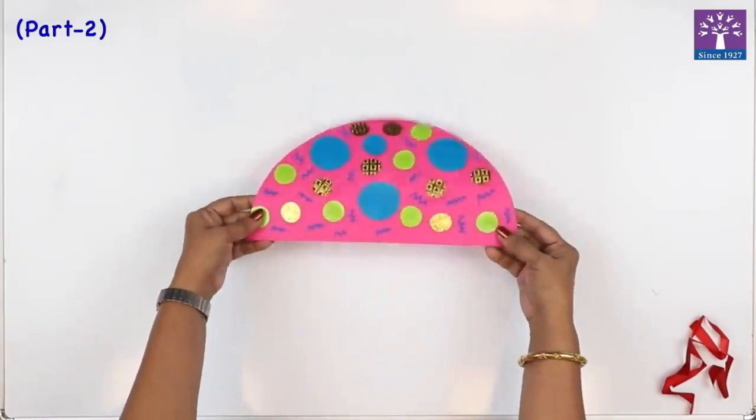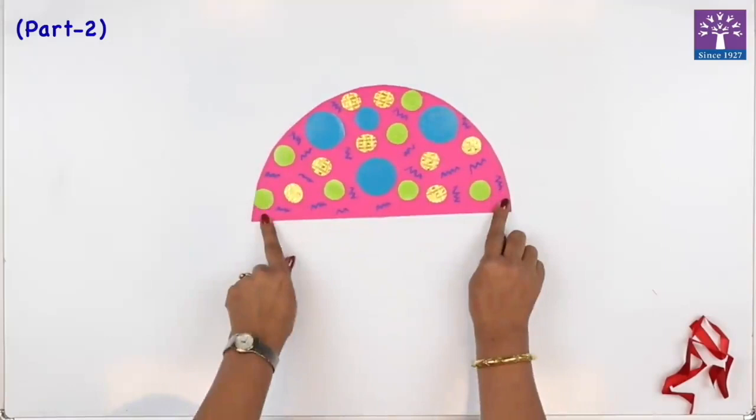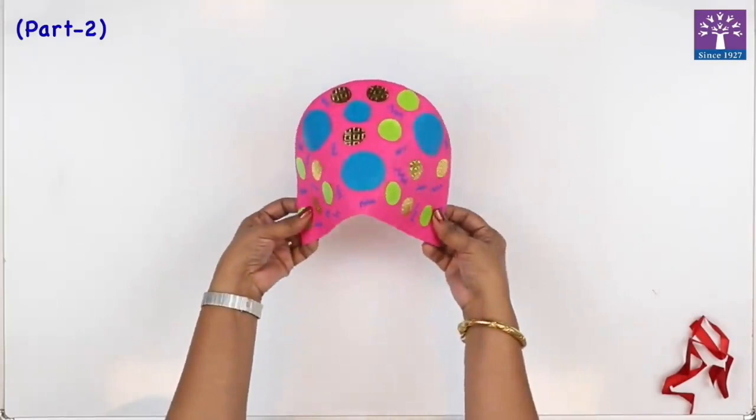Now we are going to fold the half circle in the shape of a cone. See these two edges? This is a straight line. Pick it up and just fold it like this.